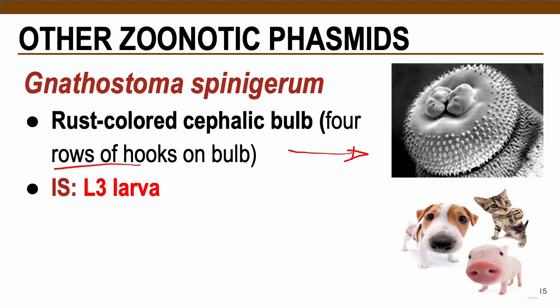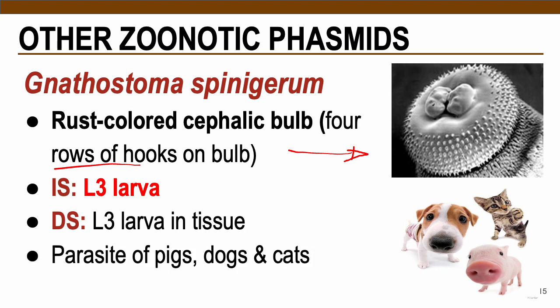The infective stage of this parasite is also the L3 larvae, and the diagnostic stage is L3 larvae in tissues. As you can see, the trend for zoonotic diseases is that the infective stage is usually L3 larvae and they attack mostly in the tissues of your organs. These are parasites of pigs, dogs, and cats.